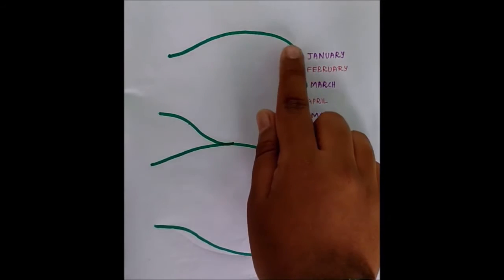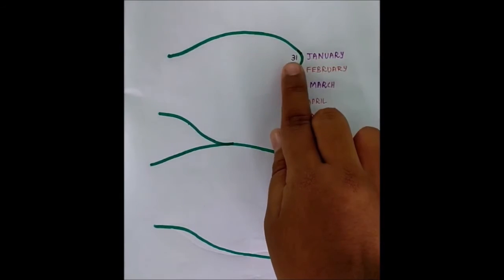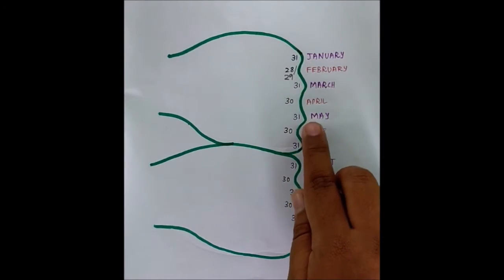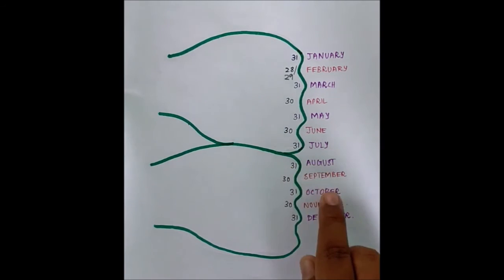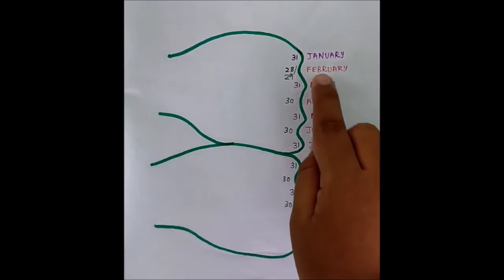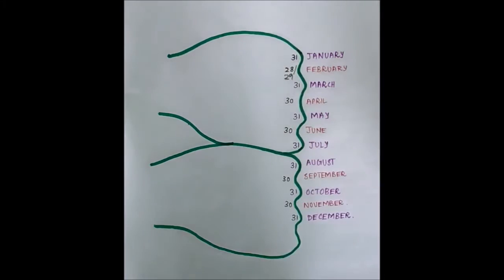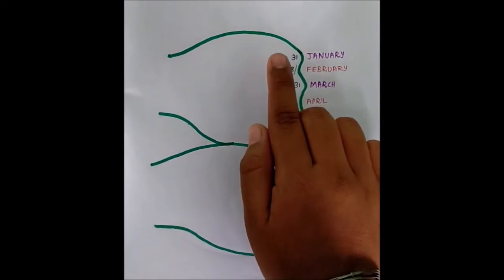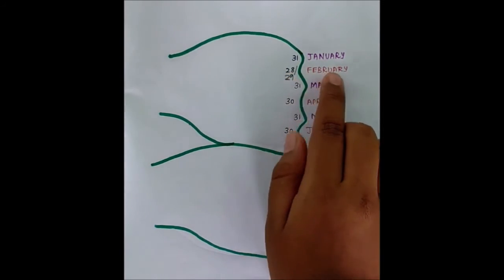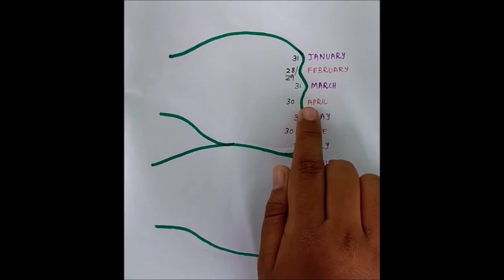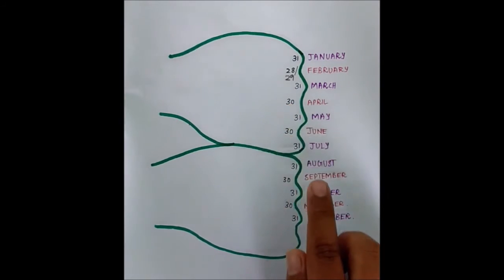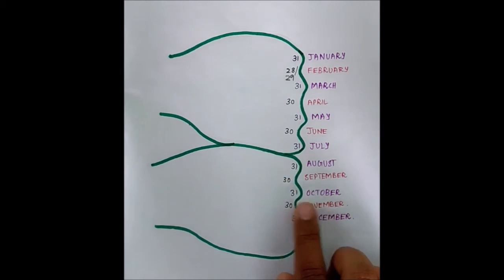The months that lie on the knuckles — the bulged region — will have 31 days. January has 31 days, March has 31 days, May has 31 days, July has 31 days, August has 31 days, October has 31 days, and December has 31 days. And the months that lie on the lower part — the grooves — will have 30 days. With one exception: February, which will have 28 or 29 days. All other months on the grooves — April, June, September, and November — have 30 days.